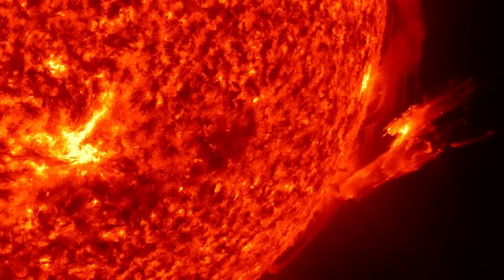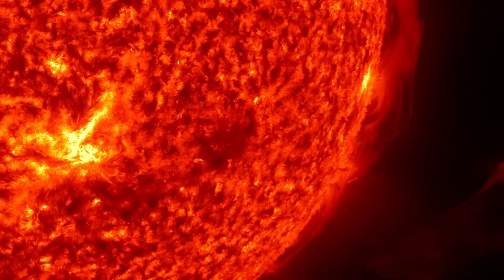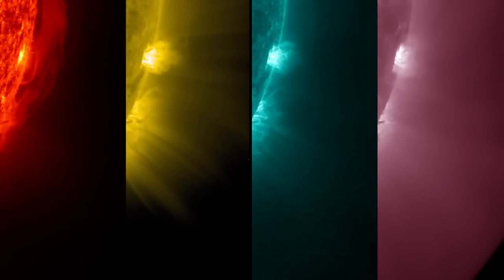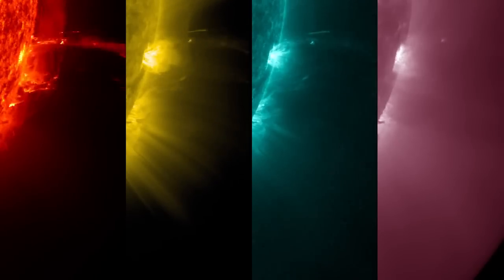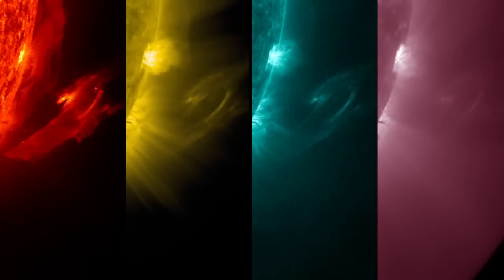The incredibly high-resolution view of the Sun provided by NASA's Solar Dynamics Observatory, or SDO, revealed the beginning of the eruption in several different wavelengths of ultraviolet light.